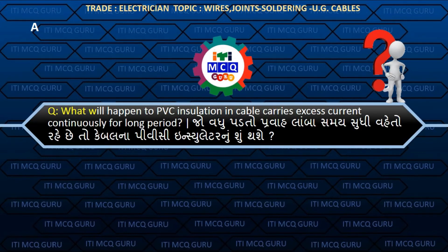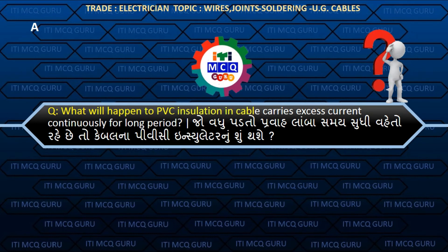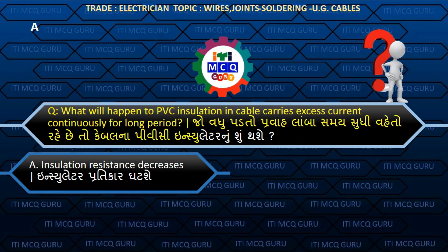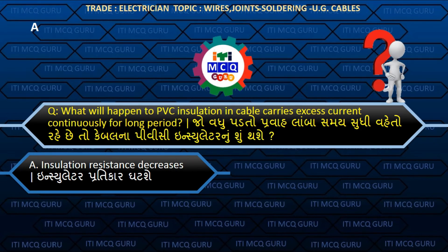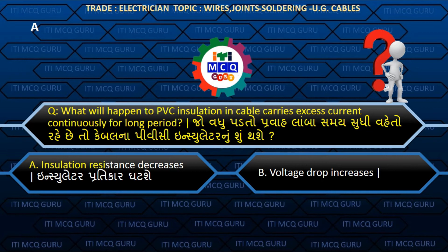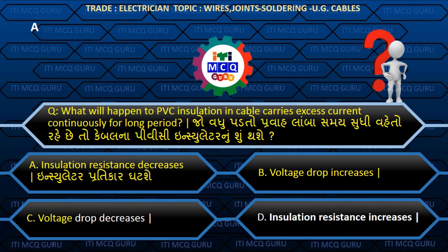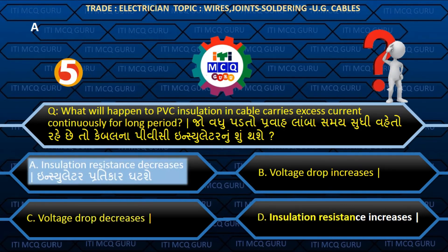What will happen to PVC insulation in a cable that carries excess current continuously for a long period? (Jo vadhu padto prawah lamba samay sudhi vaheto rahe chhe to cable na PVC insulator noo shun thashe?) Answer A: Insulation resistance decreases.